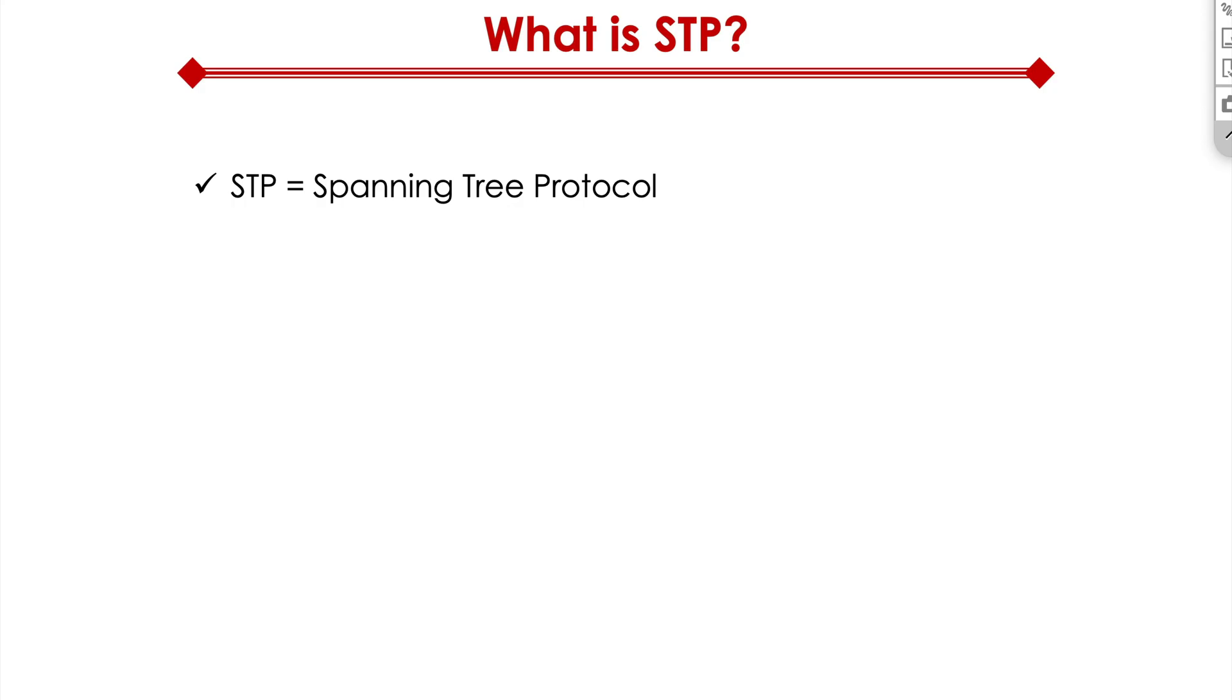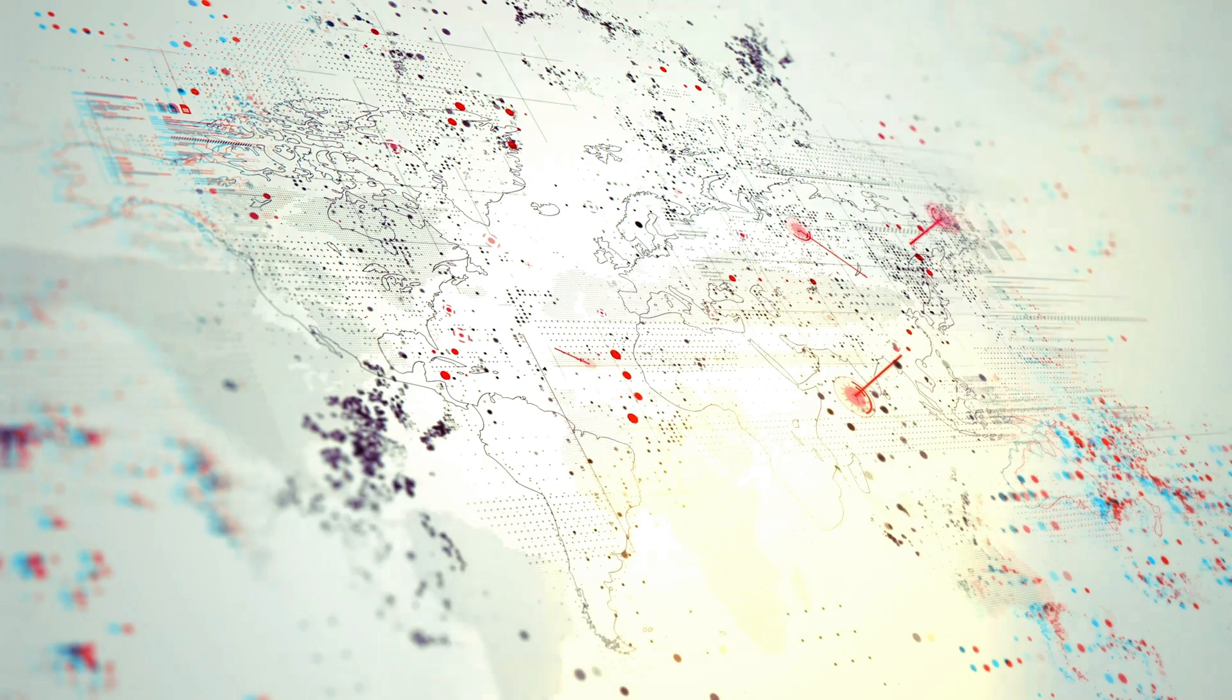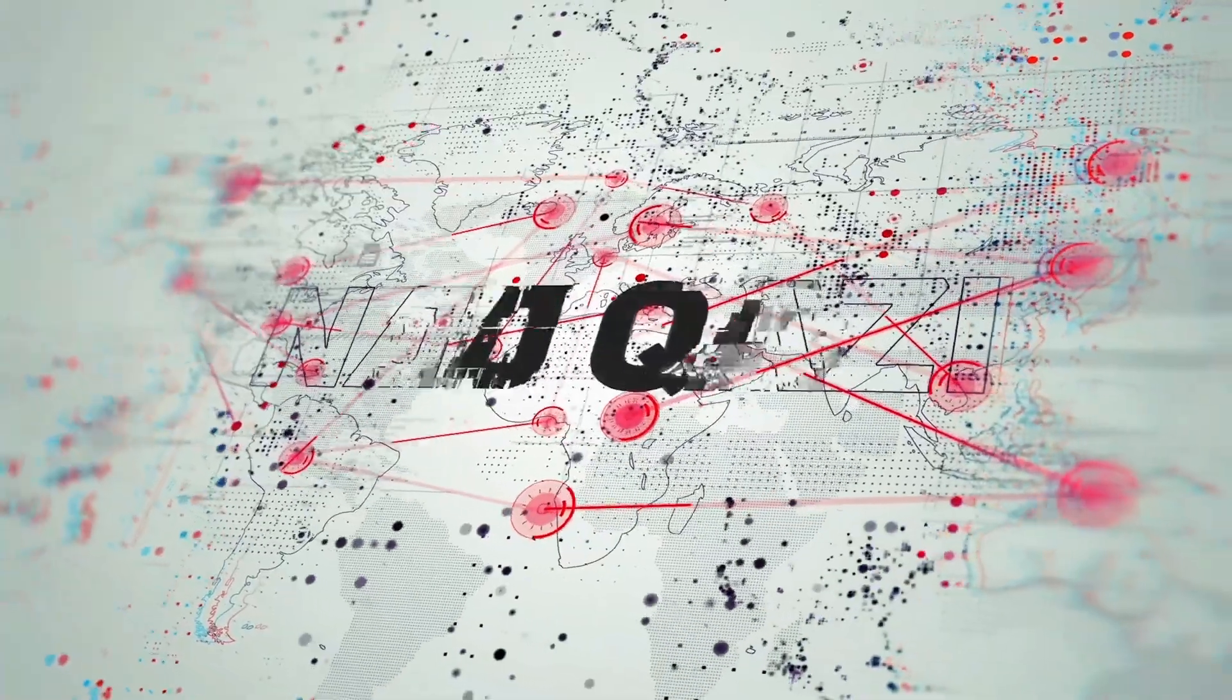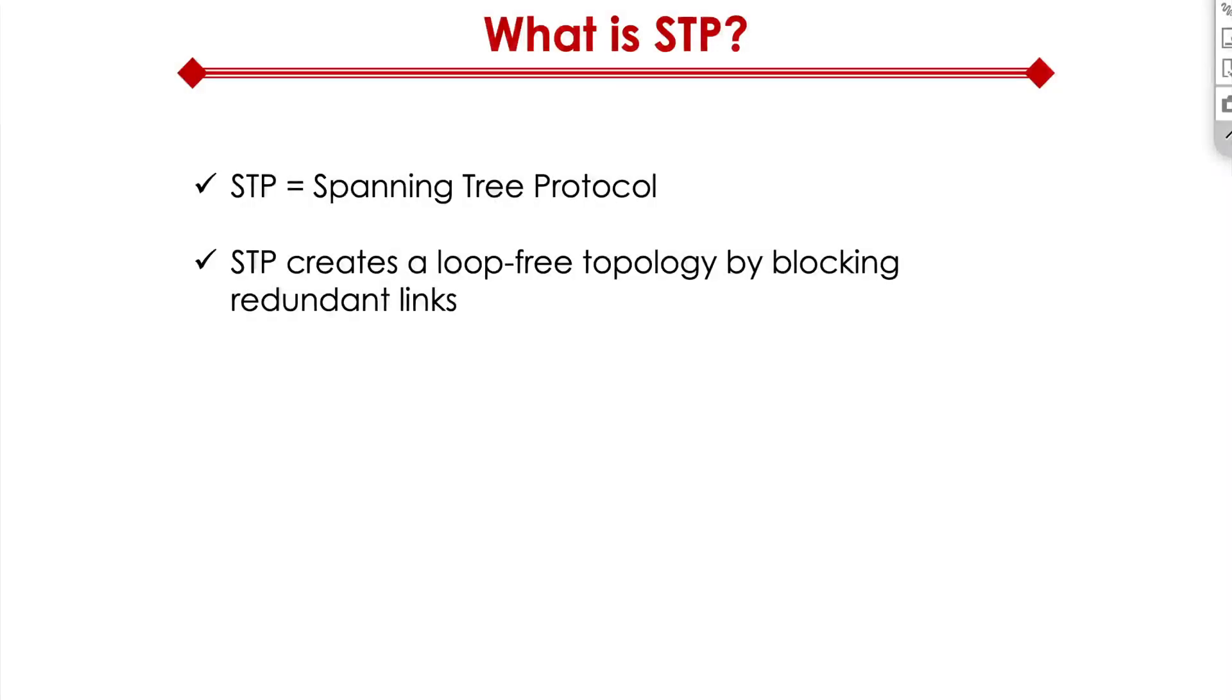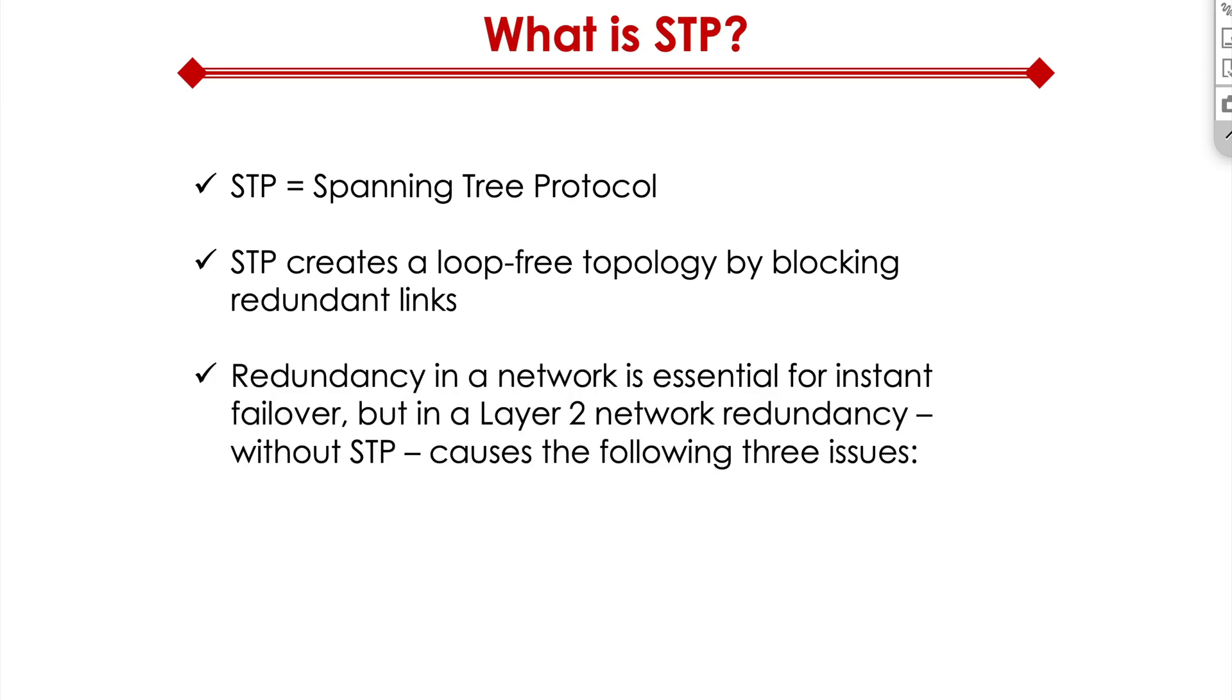What is STP? It stands for Spanning Tree Protocol. It's a layer 2 protocol and the entire purpose in life for spanning tree protocol is to create a loop-free topology by blocking redundant links.